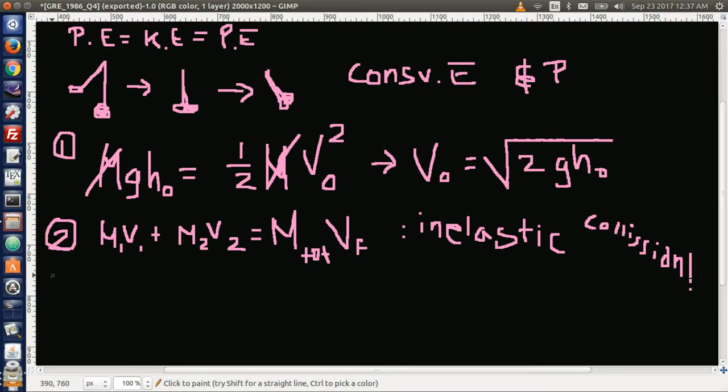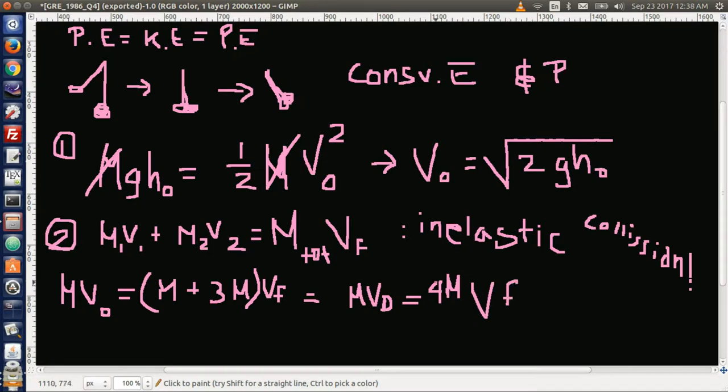So this problem has mass times v₀ equals the total mass, which is m plus 3m, times the final velocity. So we have mv₀ equals 4m times v final. Then the m cancels out, so v₀ equals 4 times v final.